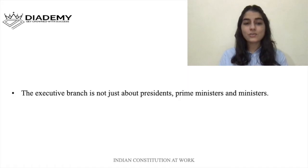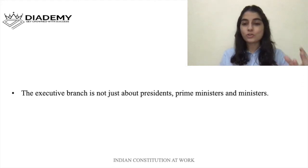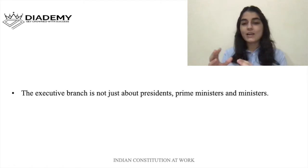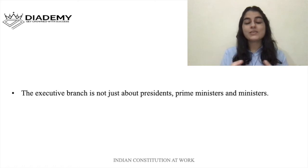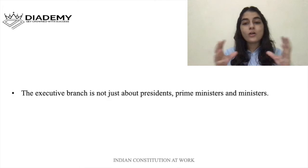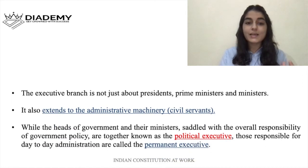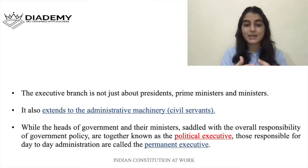The executive branch is not just about presidents, prime ministers, and ministers. The executive consists of the President, the Vice President, the Prime Minister, and the Council of Ministers. All these together comprise the executive, and they are collectively called the political executive — the President, the Vice President, the Prime Minister, and the ministers are combinedly called the political executive.